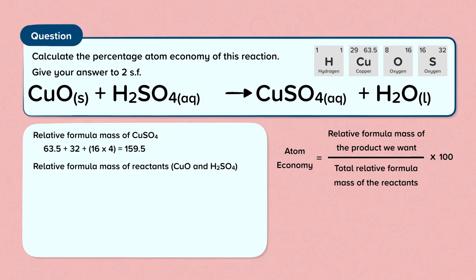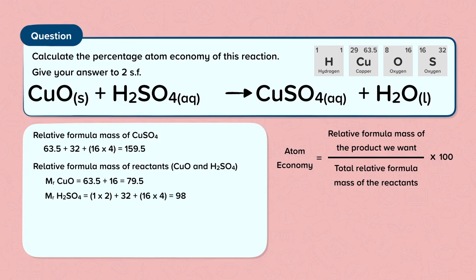Now we need to calculate the total relative formula mass of the reactants: copper oxide and sulfuric acid. The relative formula mass of copper oxide is 1 copper plus 1 oxygen: 63.5 plus 16, which equals 79.5. The relative formula mass of sulfuric acid is 2 hydrogens plus 1 sulfur plus 4 oxygens: 1 times 2 plus 32 plus 16 times 4, which is 98. Adding them together: 79.5 plus 98 equals 177.5.